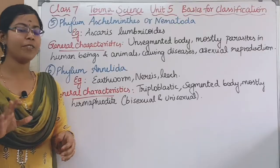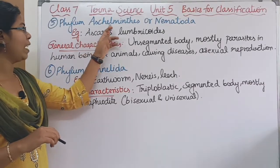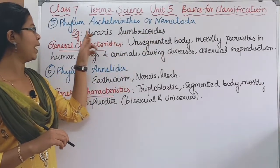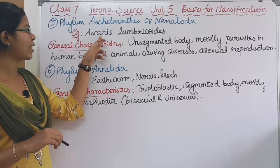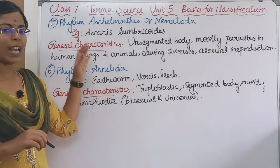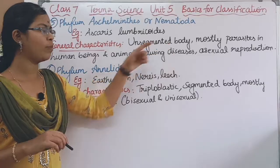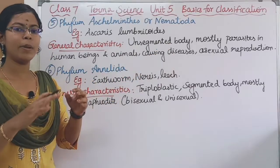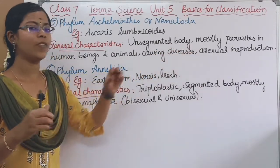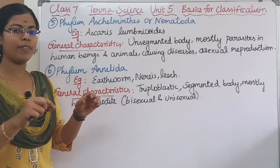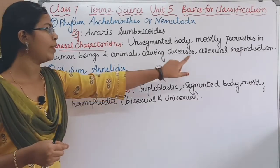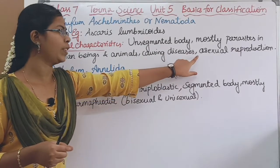The fifth division is Phylum Aschelminthes, otherwise known as Nematoda. For example, Ascaris lumbricoides. General characteristics: the body is unsegmented. They are mostly parasites. The method of reproduction is asexual.